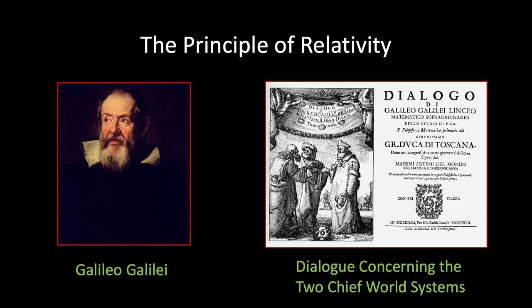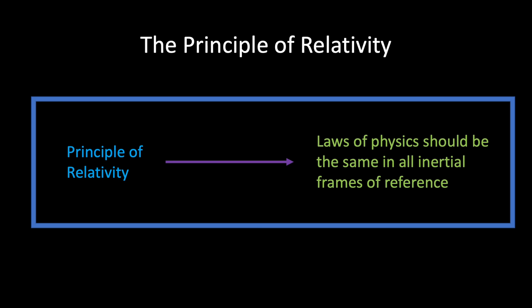Salviati disposes of this idea via a simple thought experiment. He asks the reader to imagine shutting themselves in the main cabin below decks on some large ship and performing a series of simple experiments as the ship proceeds with uniform motion in a straight line. He notes that you will discover not the least change in all the physical experiments, nor could you tell whether the ship was moving or standing still. He concludes that there should be no difference in the laws of physics used to describe motion within a stationary frame and a frame moving at a constant speed in a straight line.